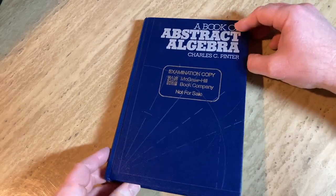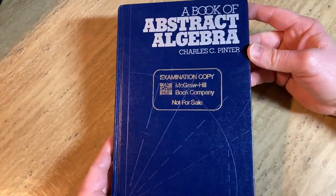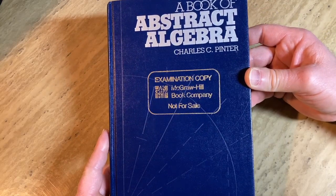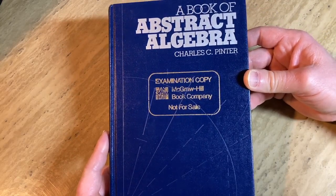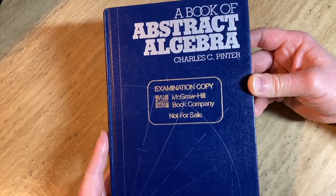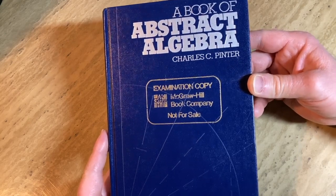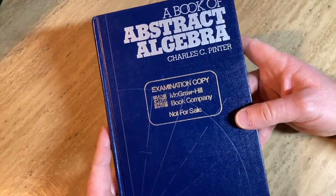I had a friend I used to work with a long time ago, and he was always talking about this book. The book is called A Book of Abstract Algebra by Charles C. Pinter, and he was always saying this was his favorite book.